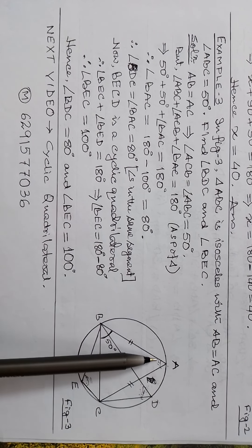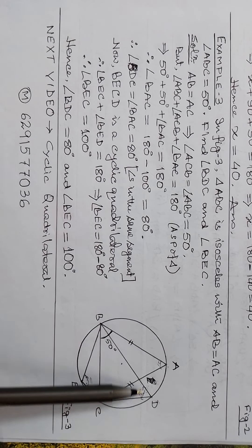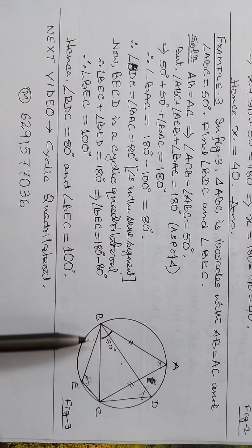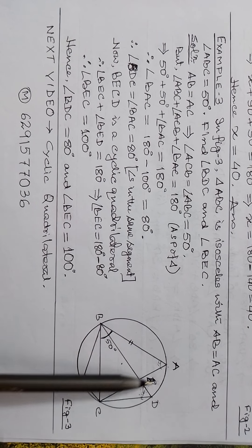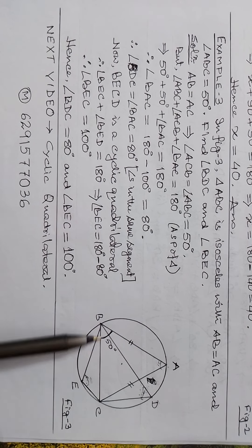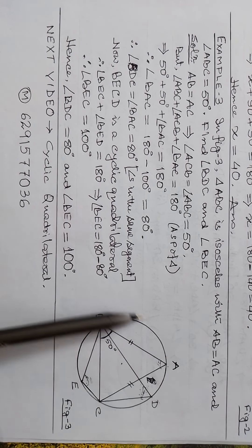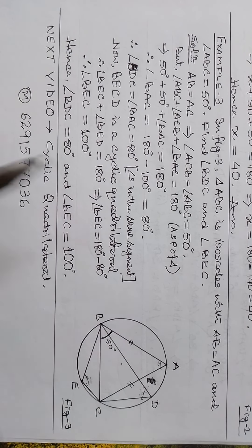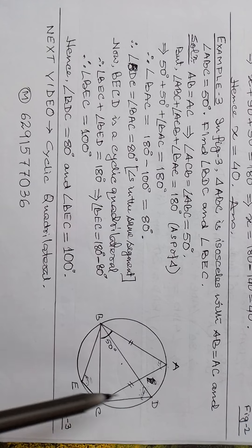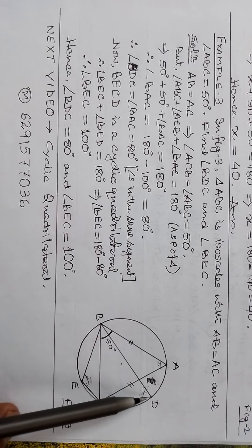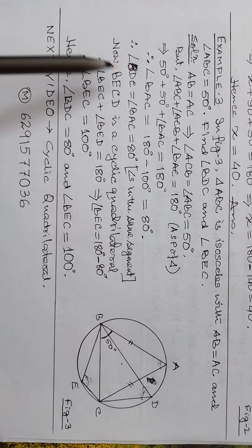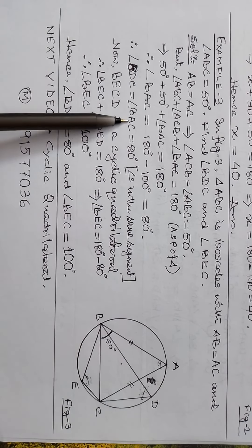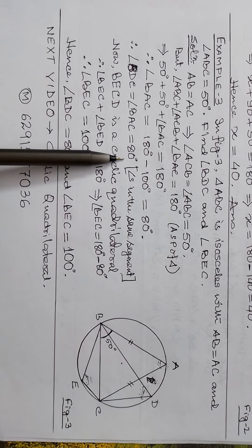Since angles BDC and BAC are in the same segment standing on the same arc BC, angle BDC equals angle BAC equals 80 degrees.